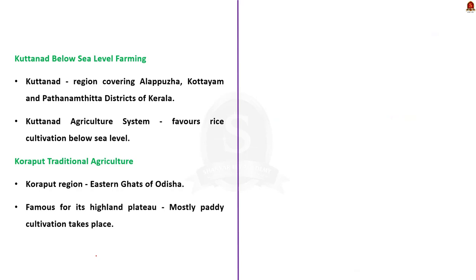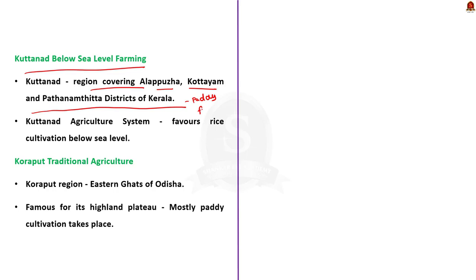Kuttanad Below Sea Level Farming: Kuttanad is a region covering Alappuzha, Kottayam and Pathanamthitta districts in Kerala. It is well known for its vast paddy fields and geographical peculiarities. The Kuttanad agricultural system is unique as it is the only system in India that favors rice cultivation below sea level. Rice cultivation is carried out in land created by draining delta swamps in brackish waters.